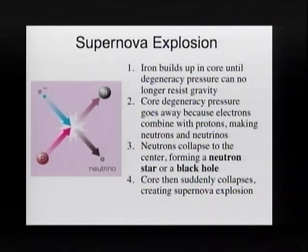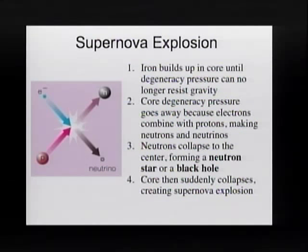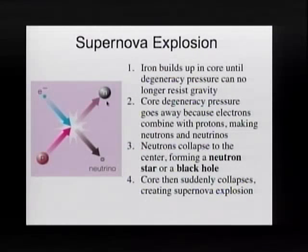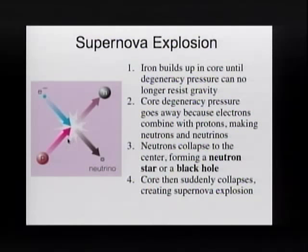You lose any information about what kind of elements were there before — you don't know if it was iron or what it was. Protons combine with electrons and form neutrons. So you have a huge ball of neutrons. That's what you have — a huge ball of neutrons.